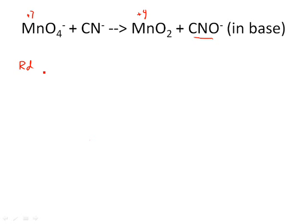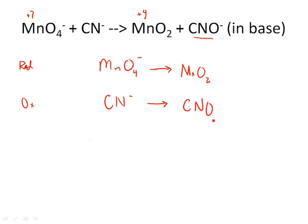So I'm going to start here by writing my reduction half reaction that the manganese, MnO4 negative charge, reduced to manganese dioxide MnO2. That's my reduction half reaction, and the oxidation half reaction then must be the CN negative going to CNO negative.